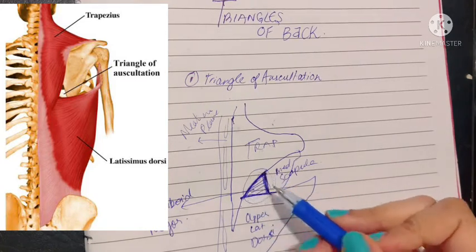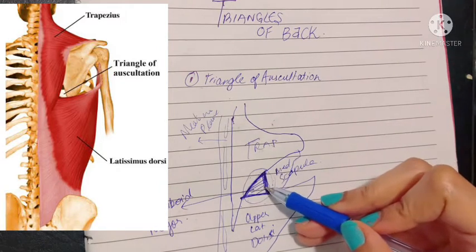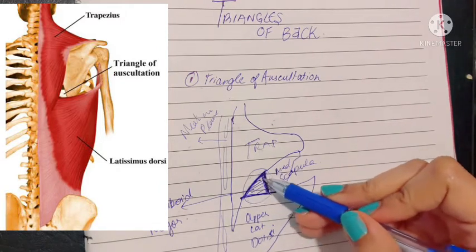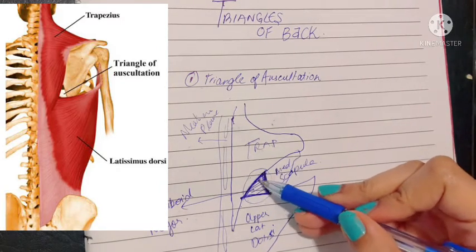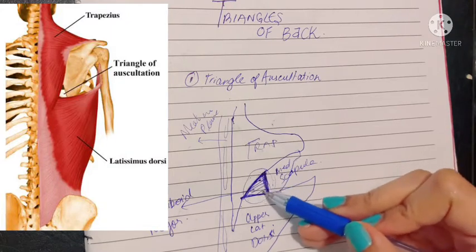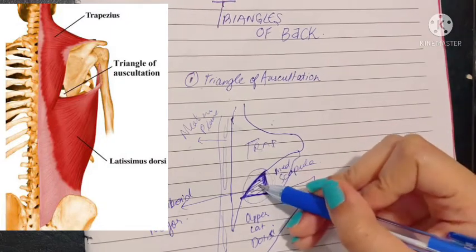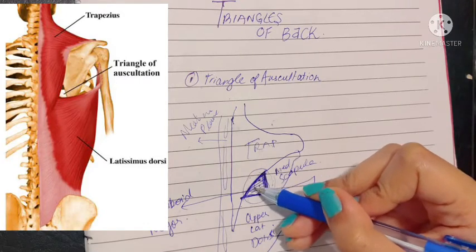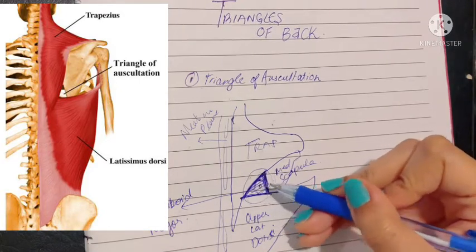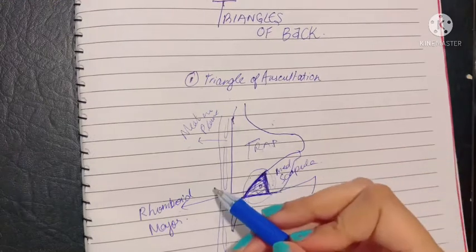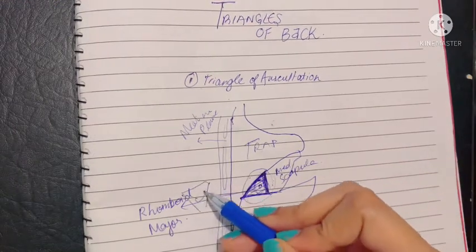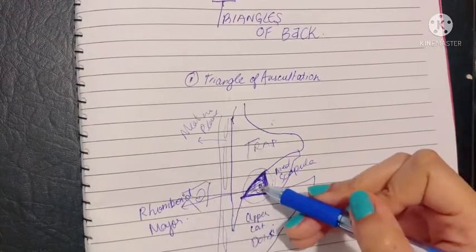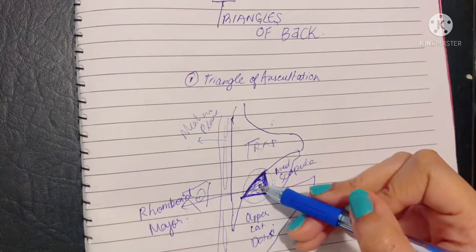This triangle holds significance in that there are no more muscles except for just the rhomboid major attached here. Hence this area is where the doctor will keep his stethoscope to be able to hear the lungs or if it's on the left side to hear the gastric sounds, as this is an area where there is lack of layers.